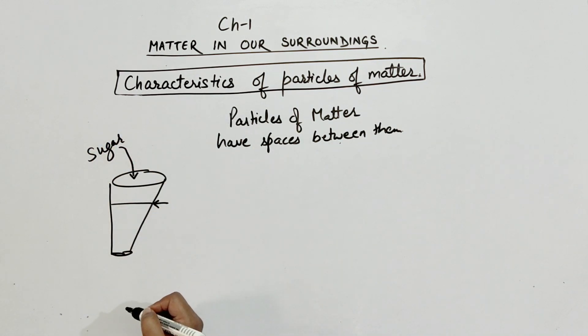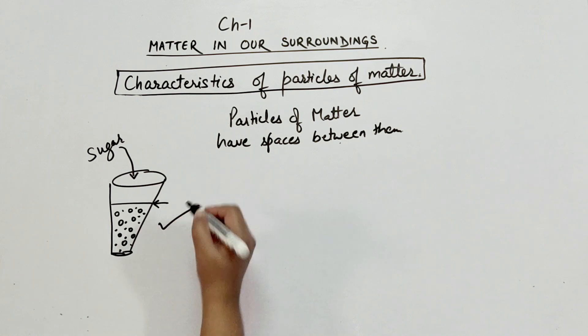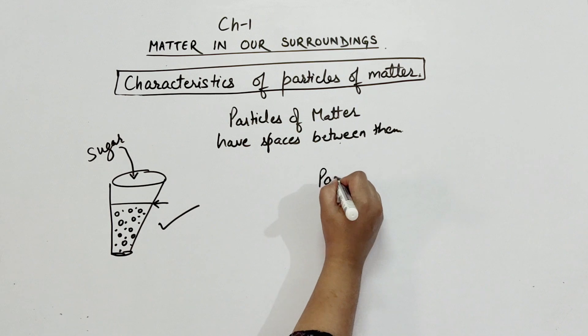You will observe that water level has not increased. This is due to the fact that particles of water were having spaces in between them and sugar particles were adjusted in those spaces. This proves that particles of matter have spaces in between them.